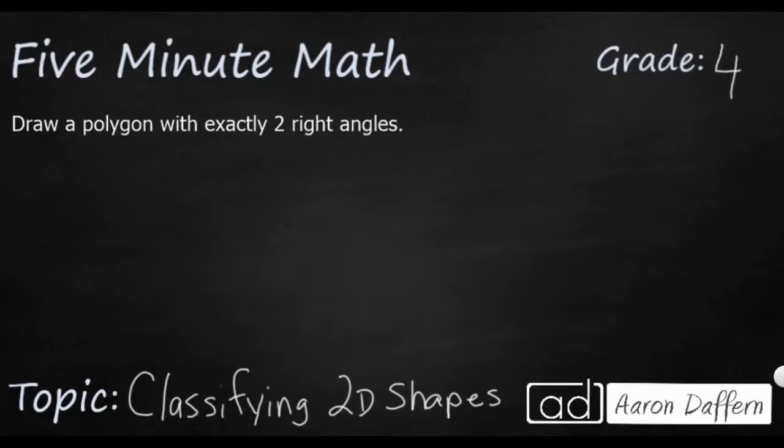Sometimes in fourth grade you're going to be asked to identify something or asked to draw something with some specificity. Right here we have something that says we need to draw a polygon. So remember this is a closed shape, and it's got straight lines, so no circles, no openings, and it needs to have exactly two right angles.